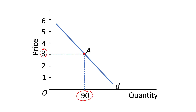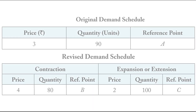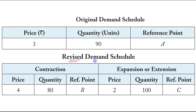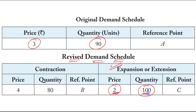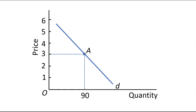This is the revised demand schedule, which has two cases: contraction and expansion. Let's first focus on the expansion part. Expansion means that with a fall in price, quantity demanded increases. So when price falls from Rs. 3 to Rs. 2, quantity demanded increases from 90 units to 100 units. At a price of Rs. 2, quantity demanded is 100 units, and the reference point is C.